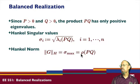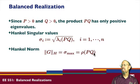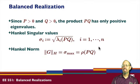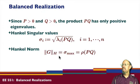The Hankel norm is the square root of the spectral radius of the product PQ — that is, the largest Hankel singular value.